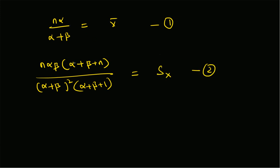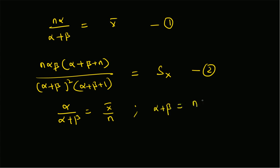Our goal is to find α and β. From Equation 1 we can derive the following relations: α/(α+β) = x̄/n; α+β = n·α/x̄; and β = α·(n/x̄ − 1). We can substitute all these relations into Equation 2 and solve for the unknown parameters.